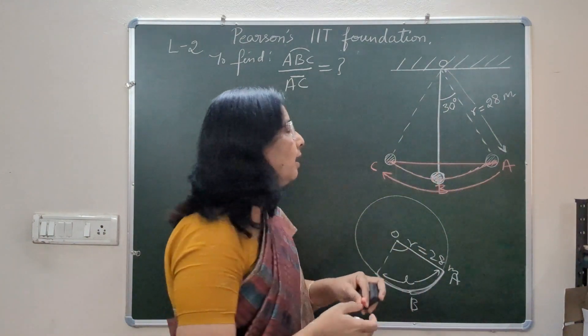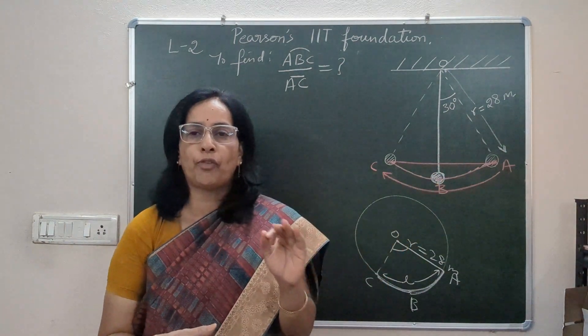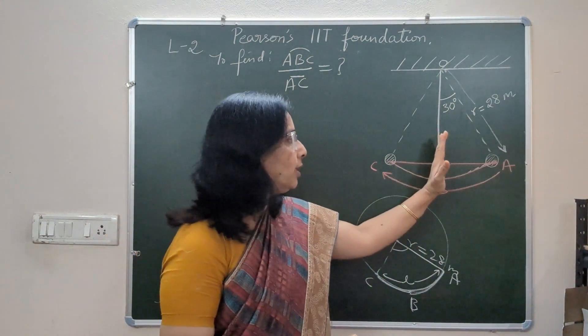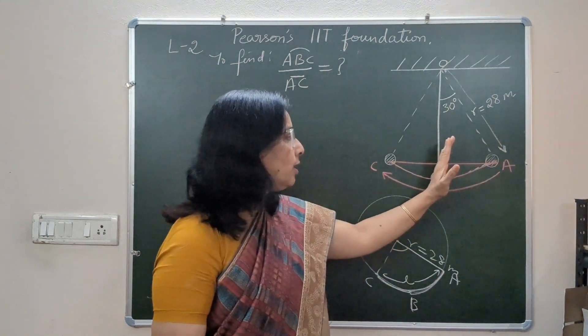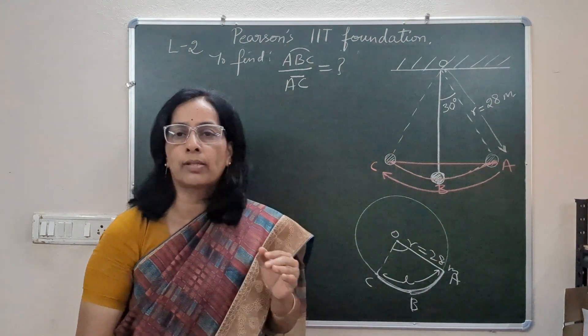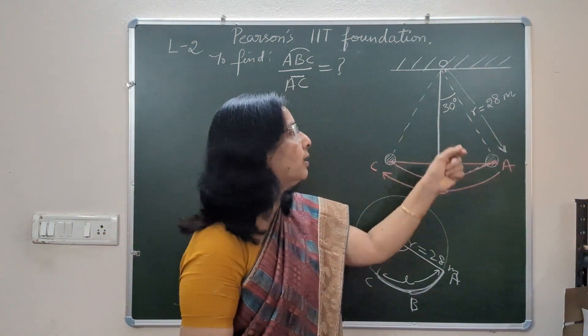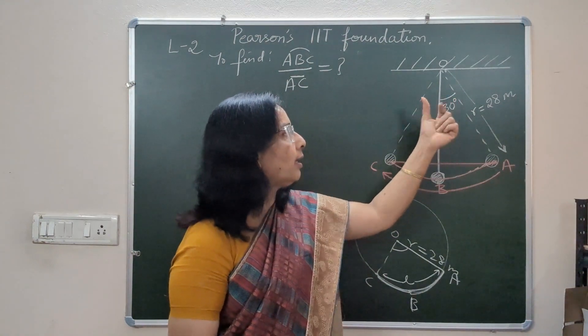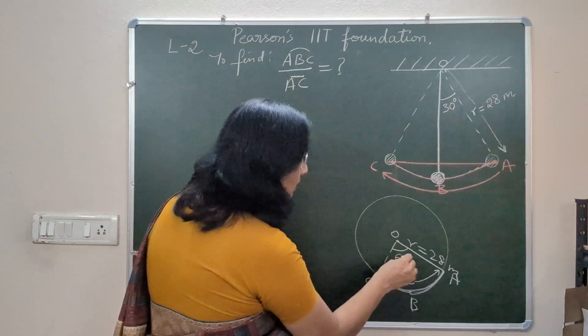For that we should know the central angle. According to law of conservation of energy, amplitude of oscillation is always the same from vertical. This extreme position is at 30 degrees from vertical, and this extreme position is also at the same distance. In that case, if this is 30 this is also 30. So total vertical angle is 60 degrees.